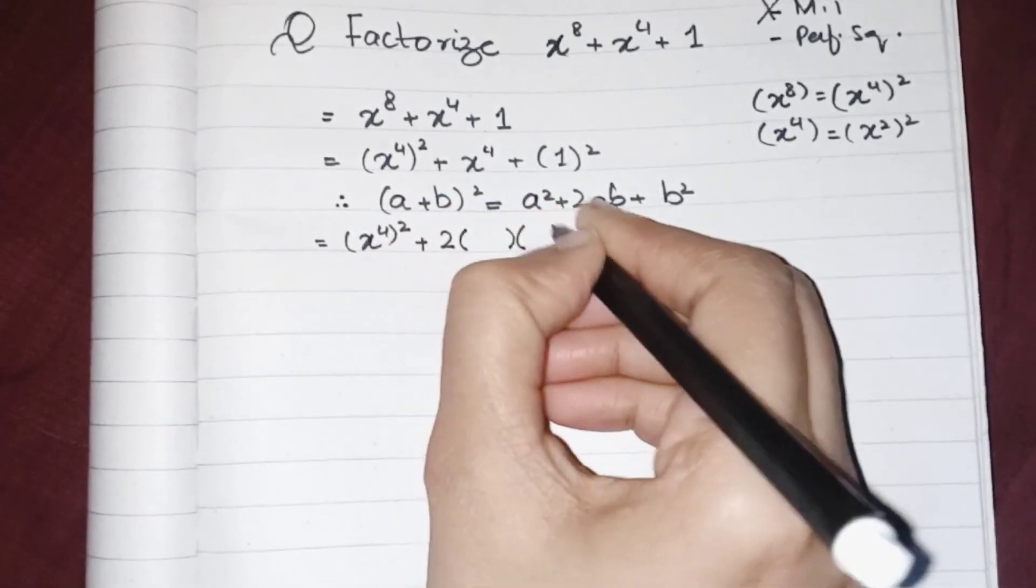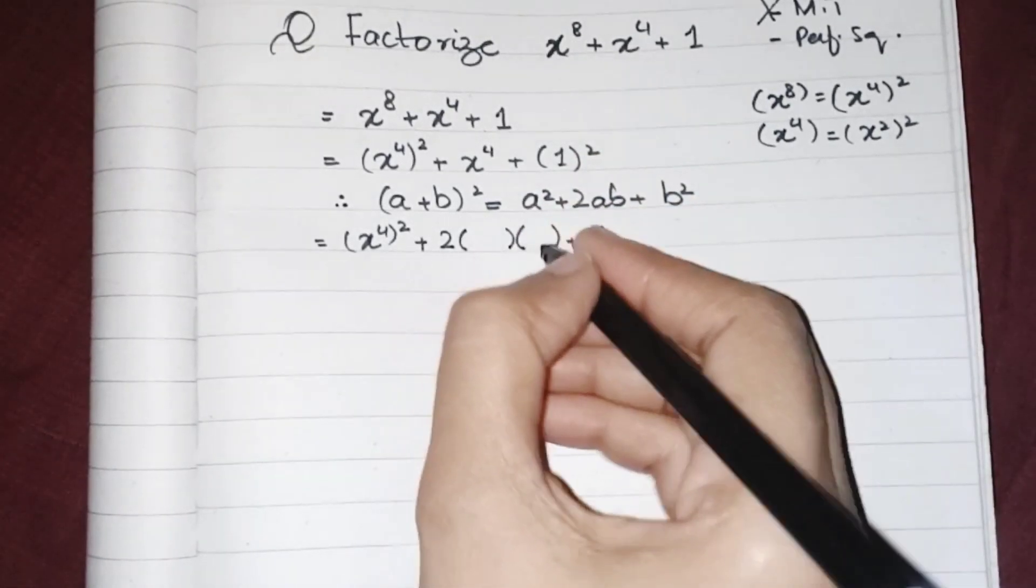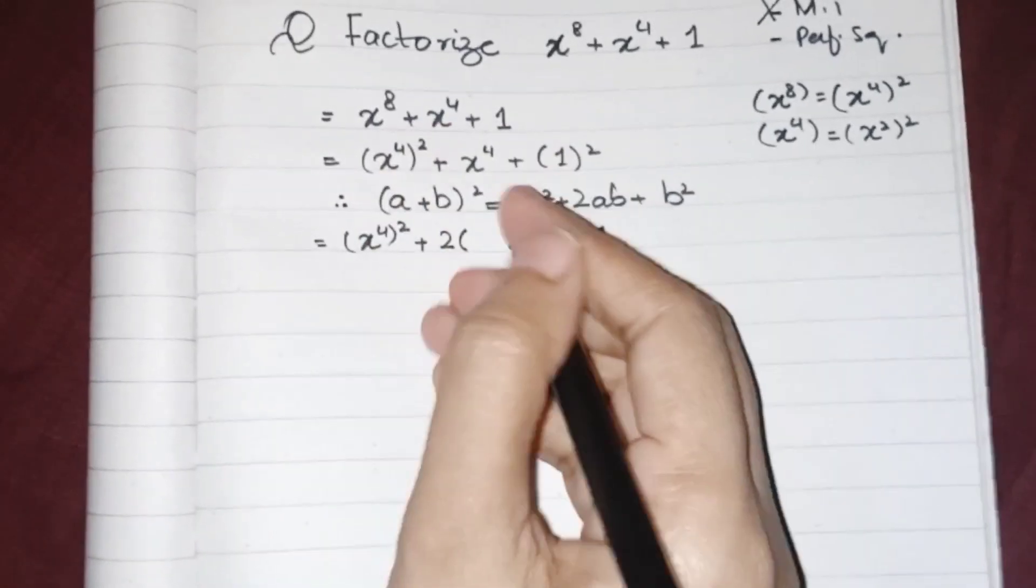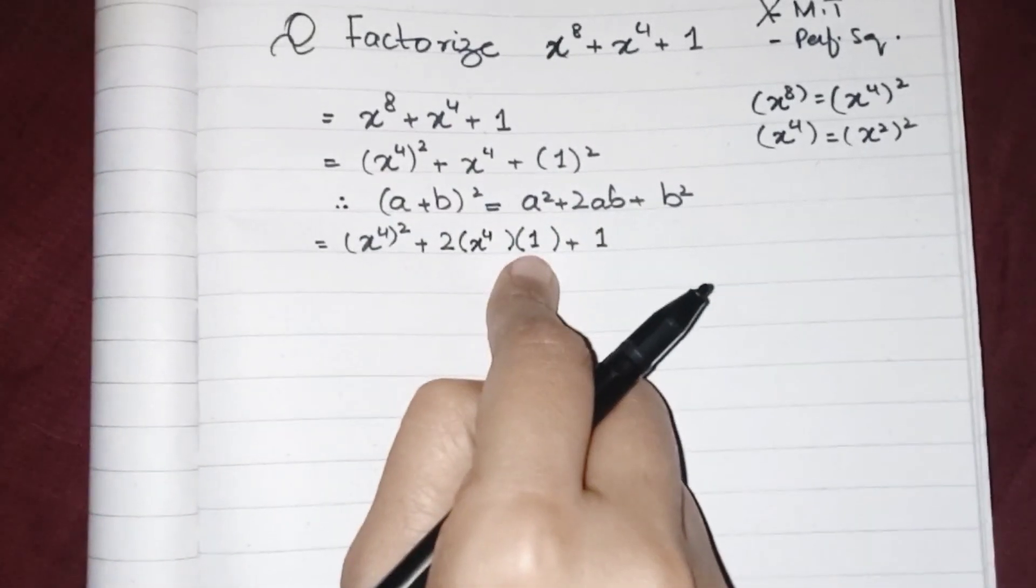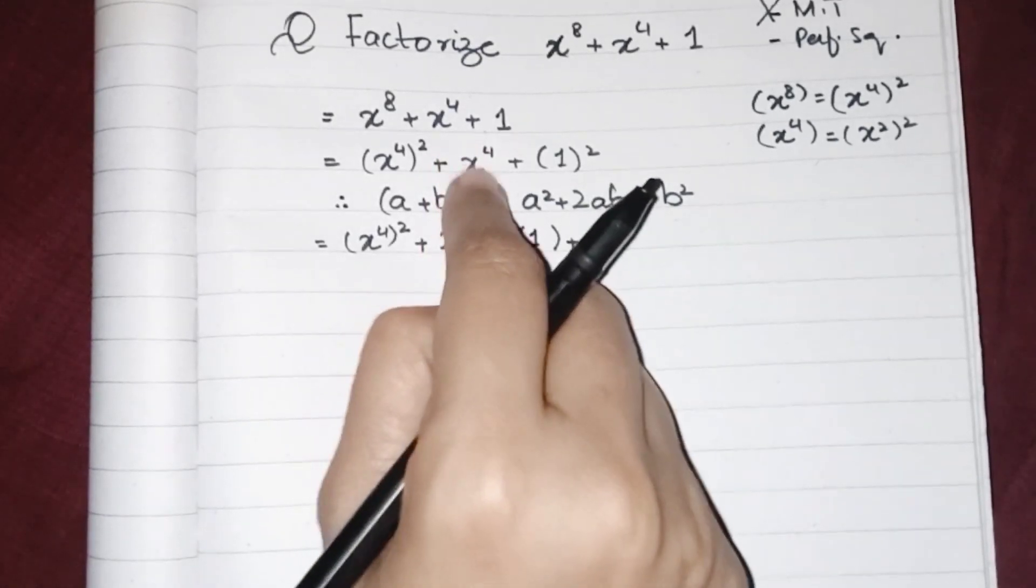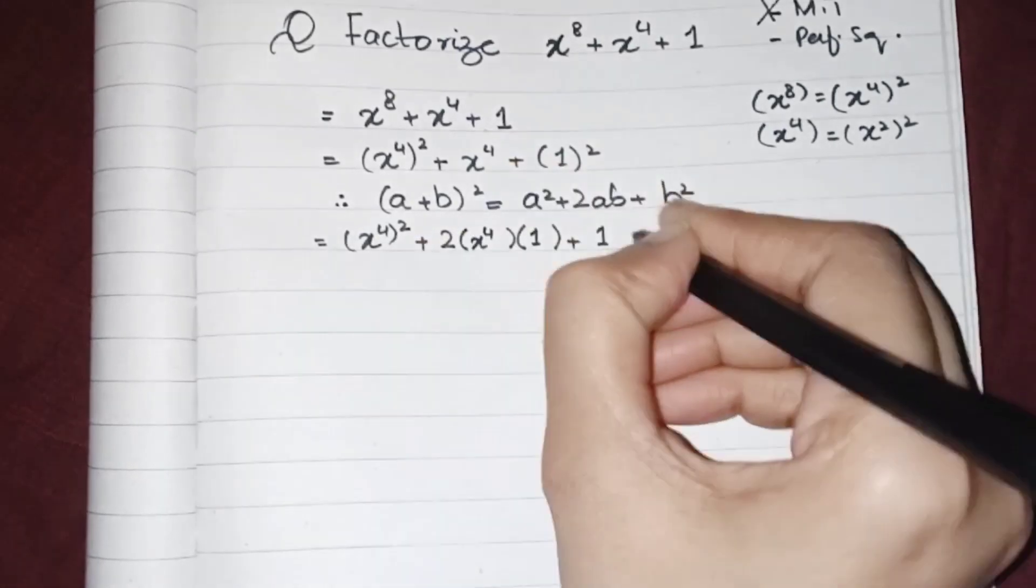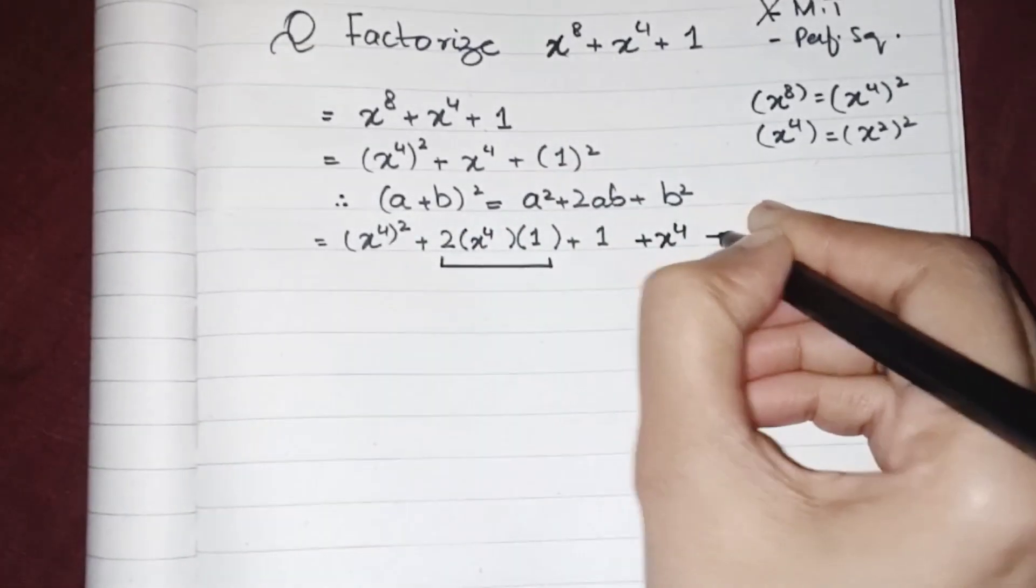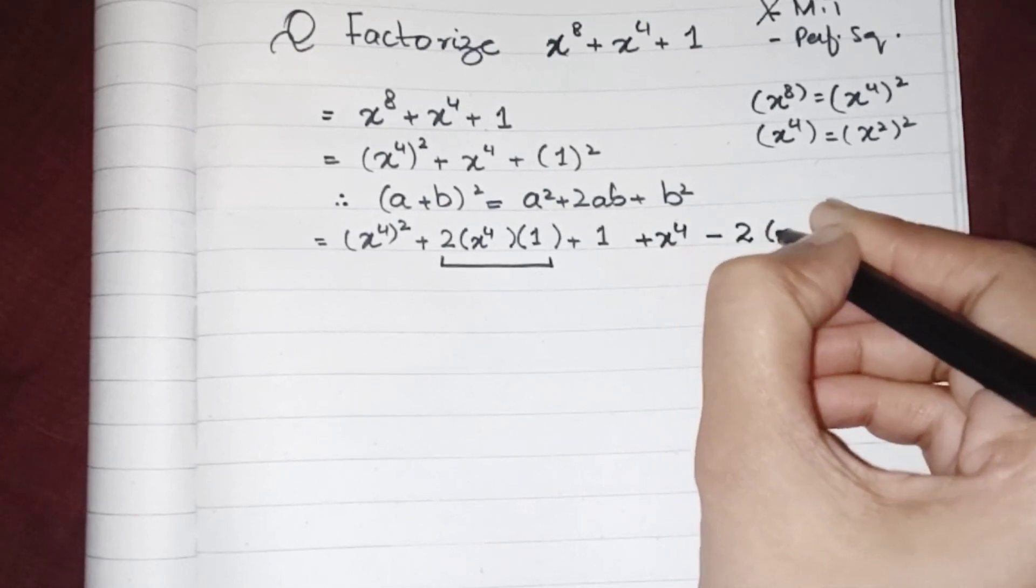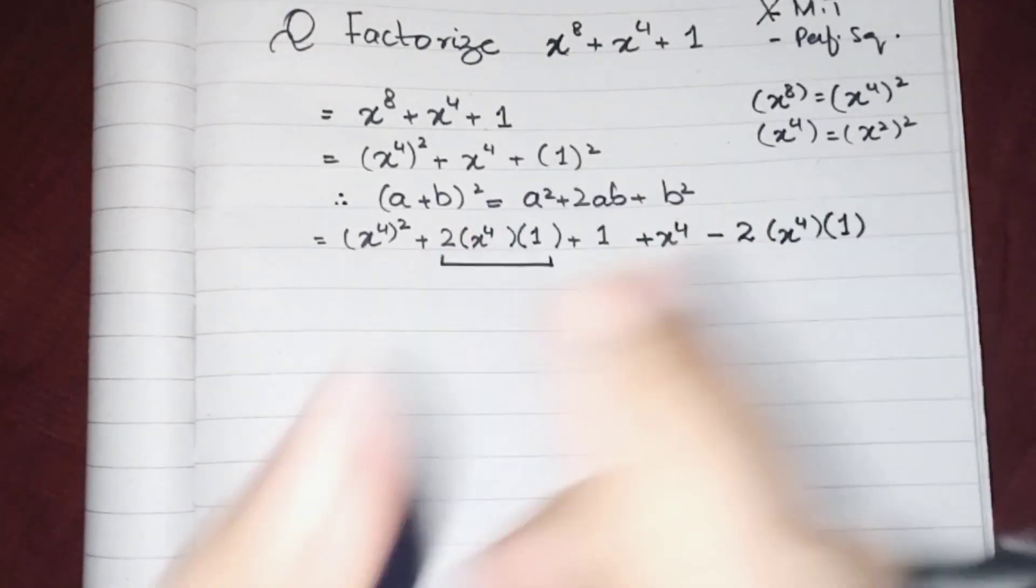Plus b will be 1^2, so we can write 1 in place of them. So we have x^4 as a and 1 as b, so definitely this one's not our ab term. So we can write this x^4, and as we added this one, so we have to subtract the same thing from this expression to balance this one.